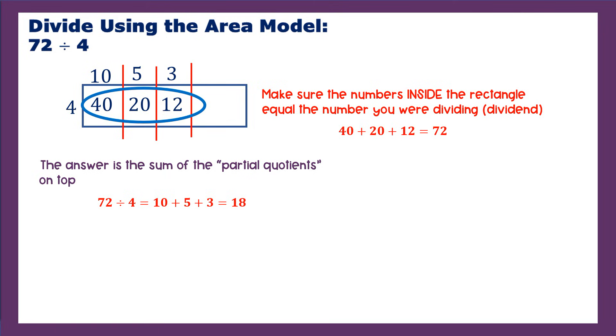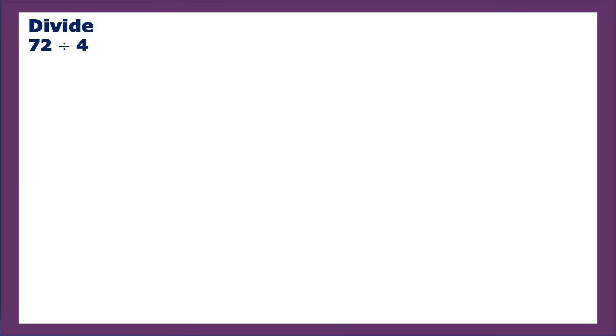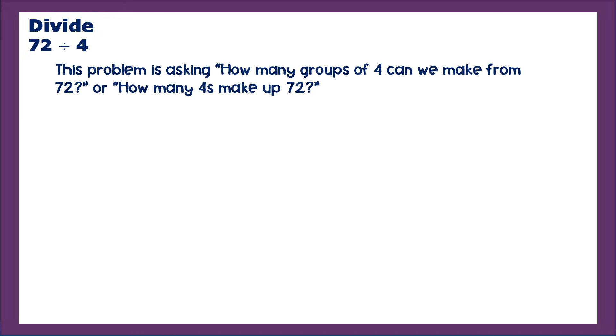Okay, so that's the area method. Let me show you how it really does relate to what we learned as kids. And by we, I mean us parents. So 72 divided by 4. This problem is asking how many groups of 4 can we make from 72 or how many 4s make up 72?